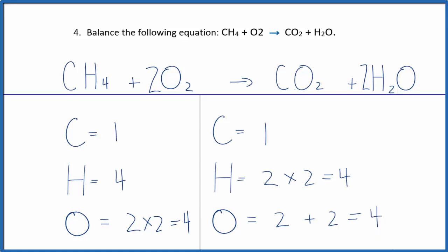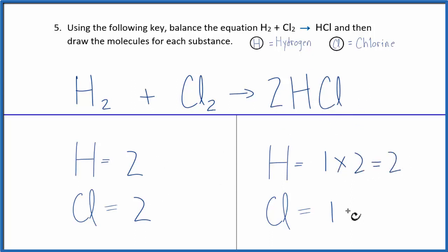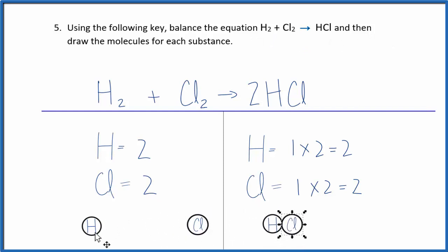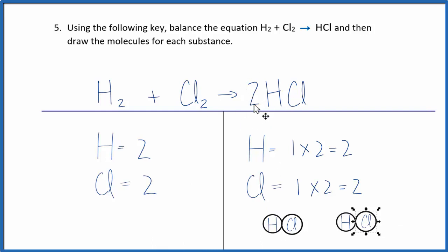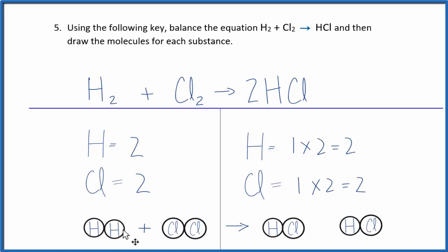For this equation, we have two hydrogens and two chlorines on the reactant side, and one hydrogen and one chlorine on the product side. To balance, we put a coefficient of two in front of HCl: 1×2=2 hydrogens balanced, and 1×2=2 chlorines balanced. We can represent this with our H2 and Cl2 splitting apart to give two HCl molecules. The equation is balanced because we rearrange the atoms and end up with the same thing as our coefficients.